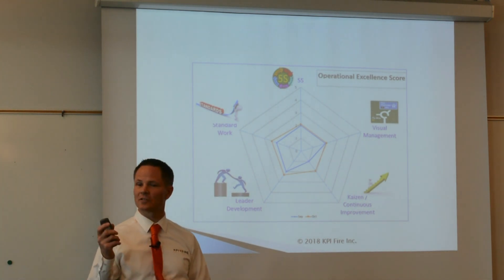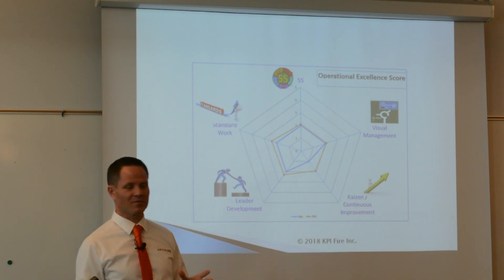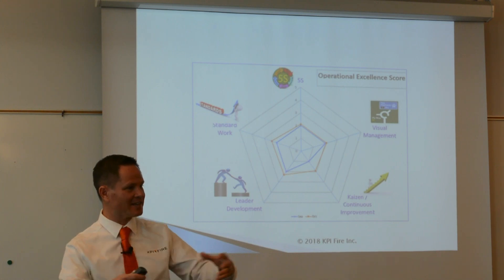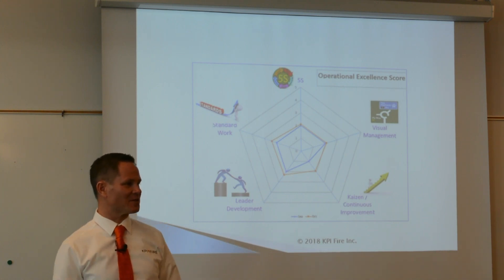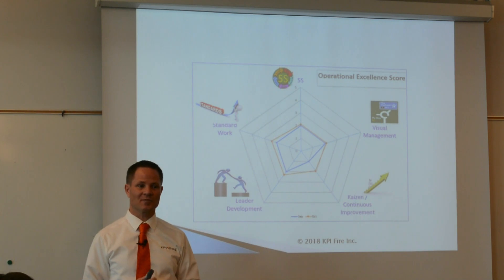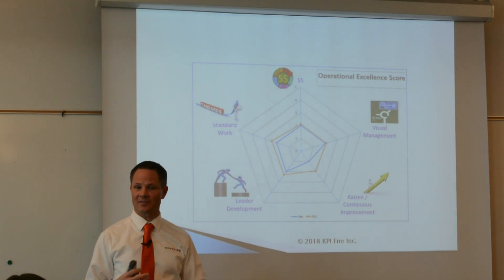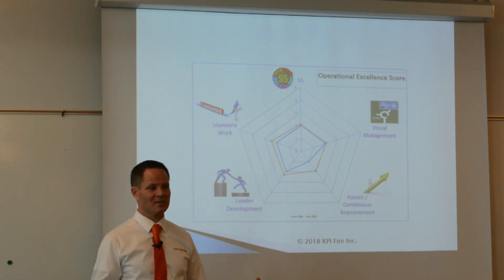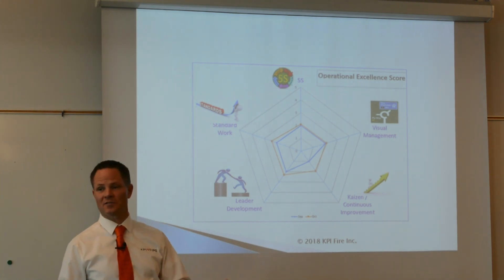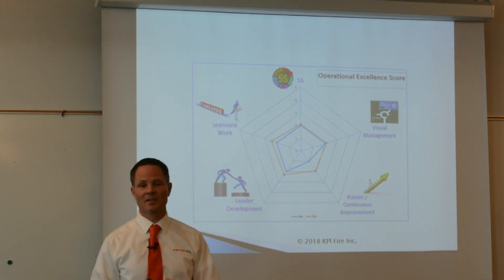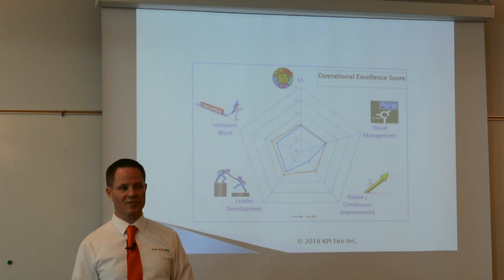If you haven't created a plan and communicated it, you're running ad hoc — you may be doing a lot of lean activities but without a bigger picture you're striving toward. That means you probably won't get to the moon if you don't know that's where you're trying to go.